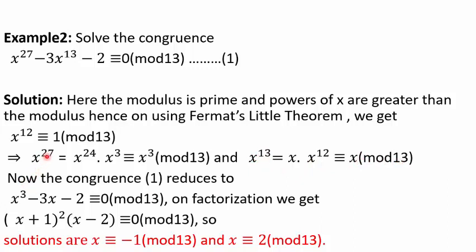Replacing x²⁷ with x³ and x¹³ with x, the congruence reduces to x³ - 3x - 2 ≡ 0 (mod 13). Factorizing the left-hand side gives (x + 1)²(x - 2) ≡ 0 (mod 13). So we get the solutions x ≡ -1 (mod 13) and x ≡ 2 (mod 13).